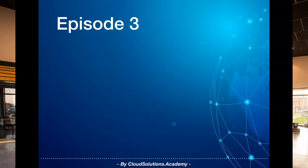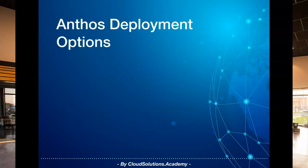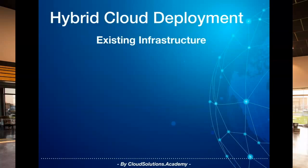In this episode we'll be going through deployment options supported by Google Anthos. The deployment options of Google Anthos can be primarily bucketed into three categories: hybrid deployment, edge deployment, and multi-cloud deployment. So let's start with hybrid cloud deployment.